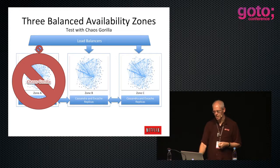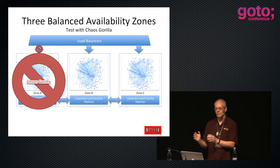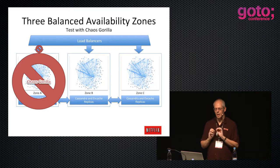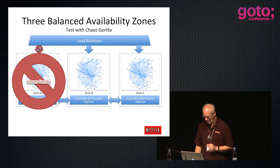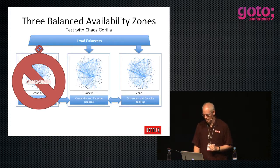If this works right, we get a slightly higher error rate for about two or three minutes after losing like a power outage on a third of our capacity. When it goes wrong it takes out the whole thing - but that's bugs. The way it's supposed to work is that it keeps working, and it has done that a bunch of times.